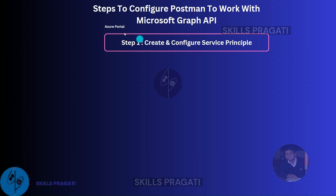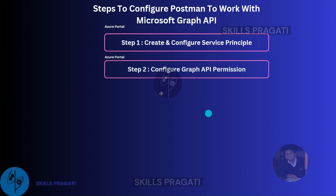We are done with step 1. Now let's perform step 2 to configure the service permission to access the required resources of M365. For our example, I will add the report scope of M365. The report scope is very useful when you want to get information about your M365 tenant usage. I will walk you through each endpoint of the report scope in a later session. So let's jump into Azure Portal and configure permission to use the report scope of Microsoft Graph API.